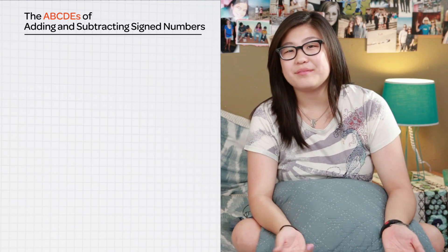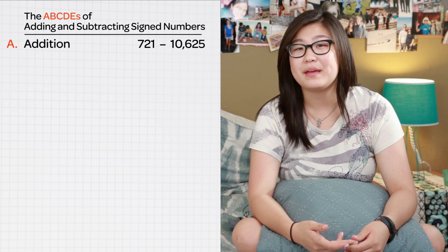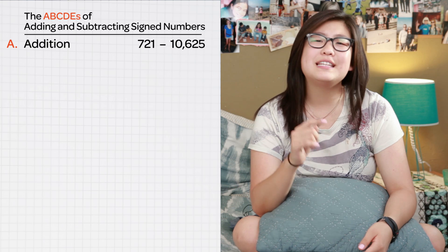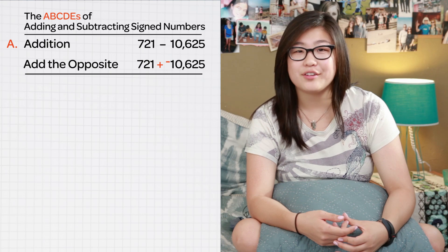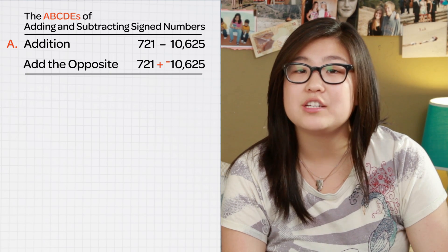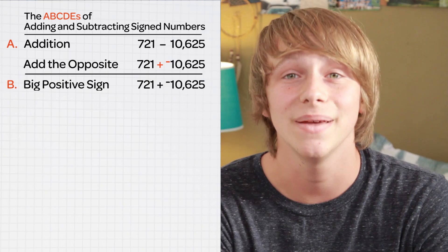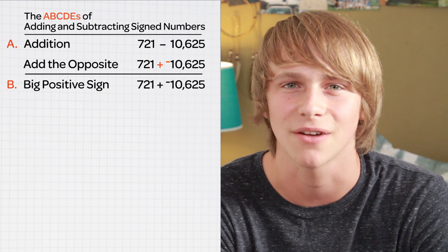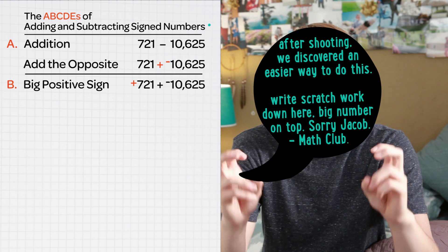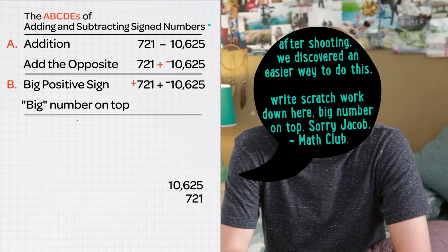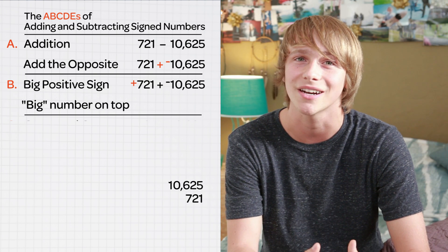Let's start with A — Addition. Are we dealing with an addition problem? If we are, great, we can move on to B. But if not, we need to make it an addition problem by adding the opposite, also known as the additive inverse. This property allows us to change the operation if we flip the sign of the second number. Now you're ready for B — Big positive. Place a big positive sign in front of any positive number, and place the bigger numbers first using the commutative property. This helps set up the scratch work.